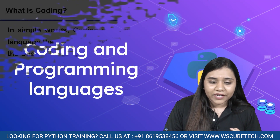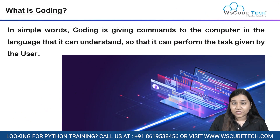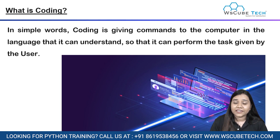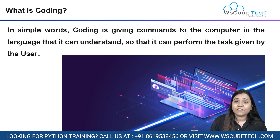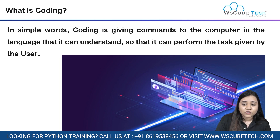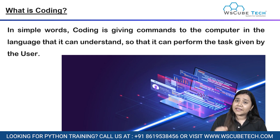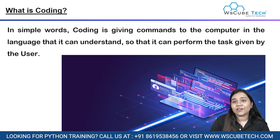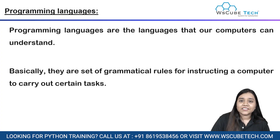Coding is nothing but a set of instructions that we give to the computer in a language it can understand. Computers cannot understand any of the languages that we humans speak — computers have their own language. When we give instructions to the computer in that language to make it do a certain task, that is called coding.